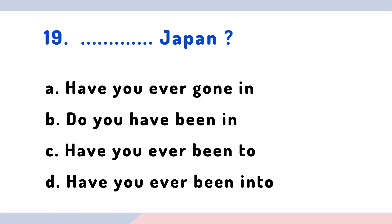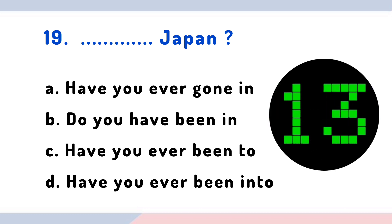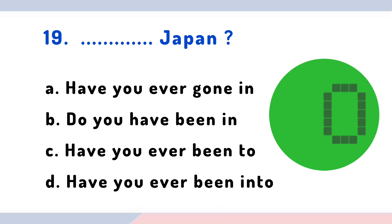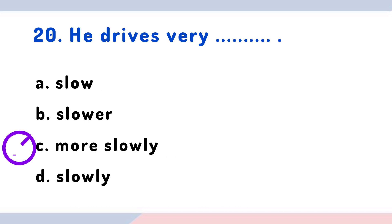Question 19: Japan. Options: have you ever gone in, do you have been in, have you ever been to, have you ever been into. Question 20: He drives very. Options: slow, slower, more slowly, slowly.